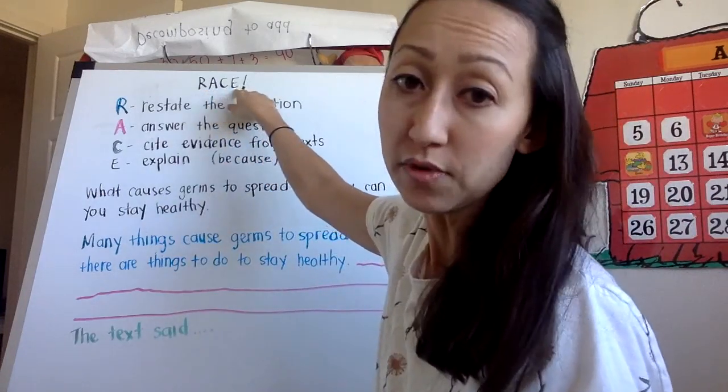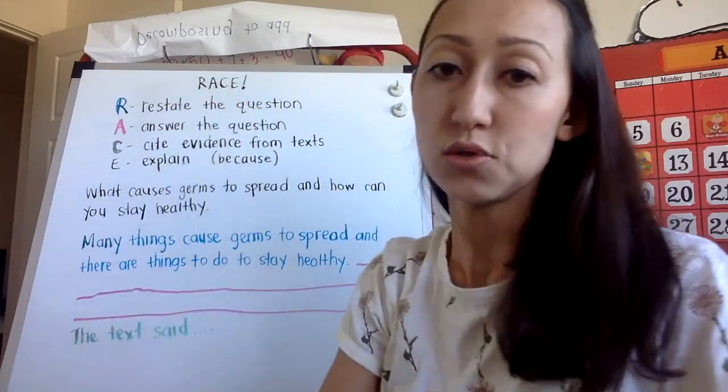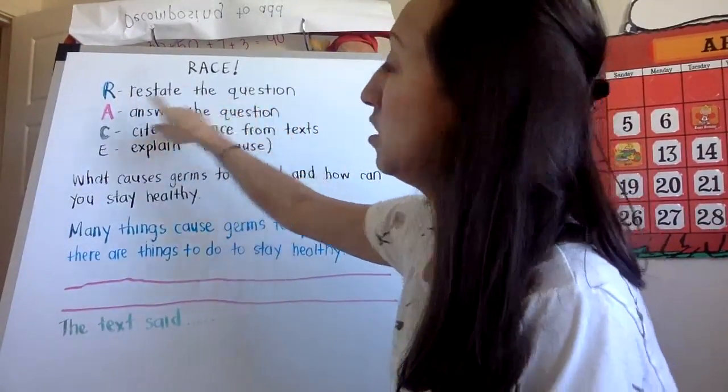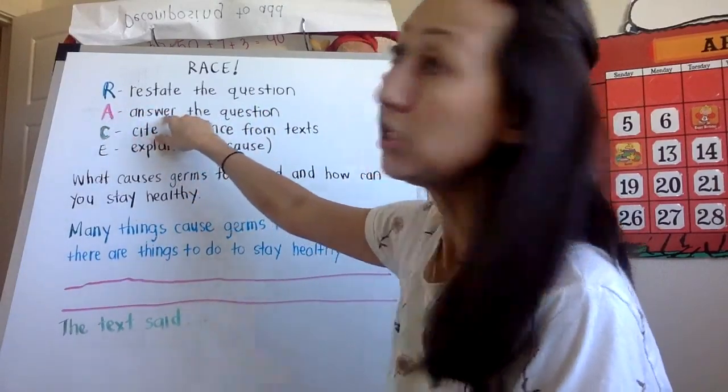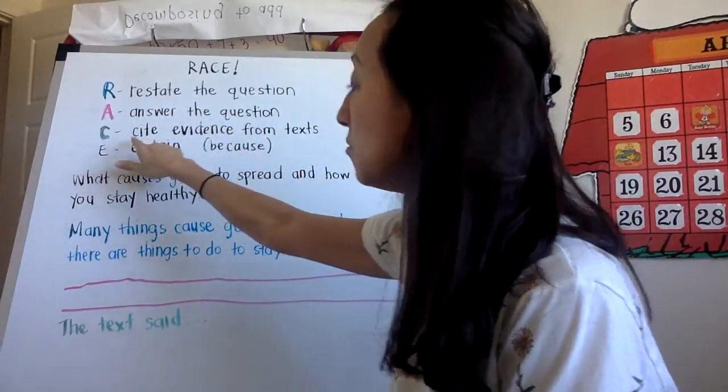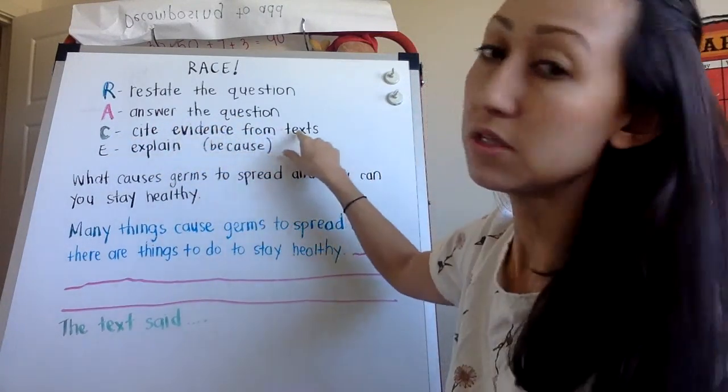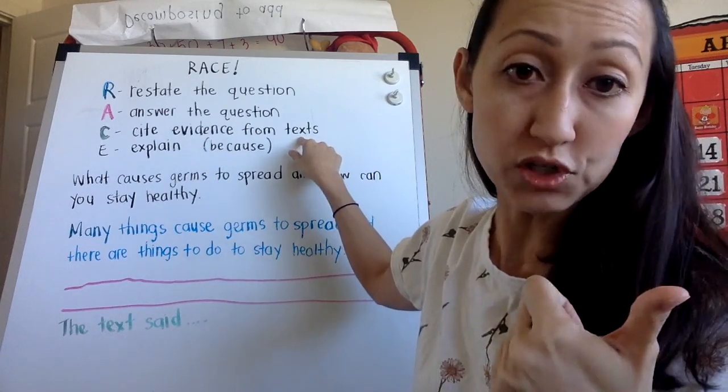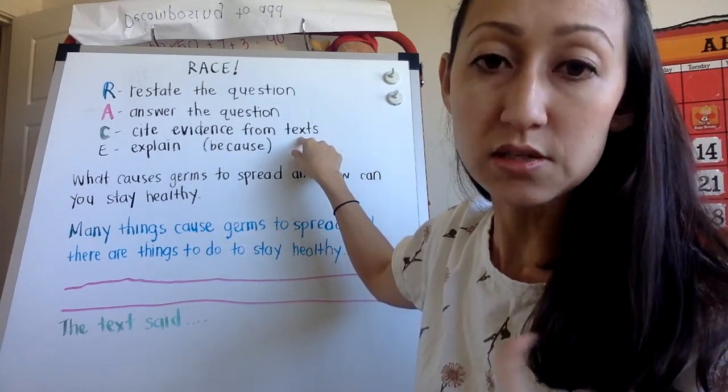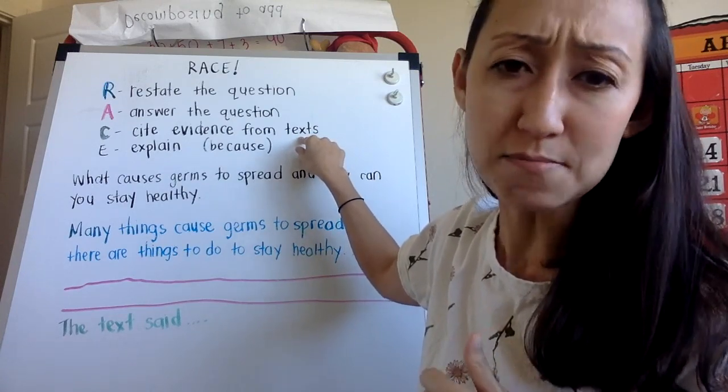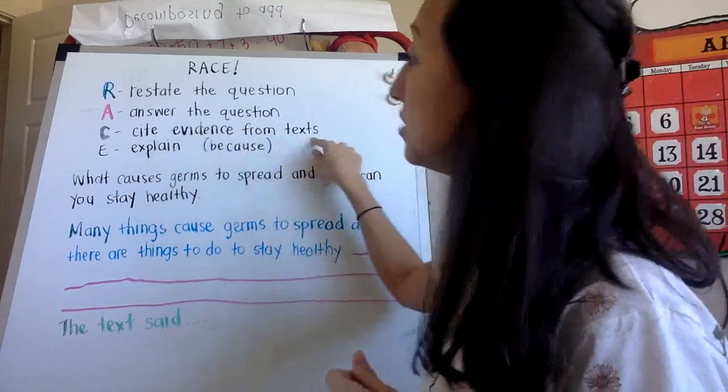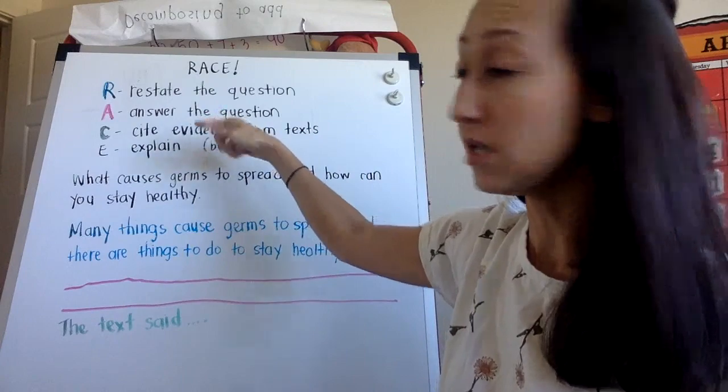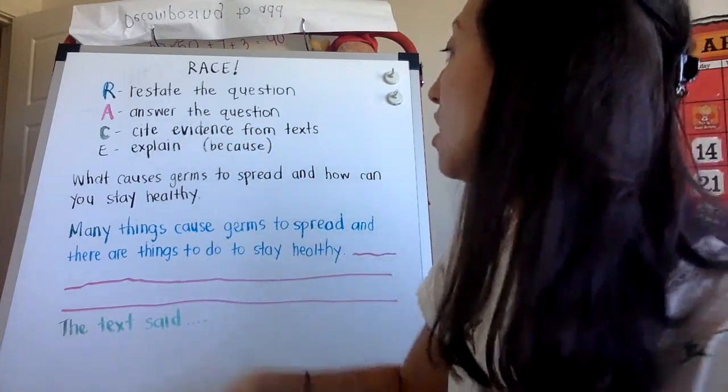I want you to use RACE. We've done this before in class. So I got some of it started for you. R stands for restate the question. A stands for make sure you answer the question. C means you have to cite evidence from the text. You're going to be using yesterday's text called germs are not for sharing. And you're going to be using today's text in the Reading Rainbow link called germs make me sick. So use both texts and see if you can cite evidence from both. And then E is explaining the text evidence by using words like because or so.